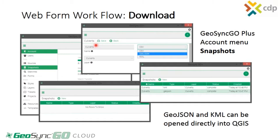You select the New button for snapshots. It opens a dialog where you'll give it a name. In this case, I'm using my culverts layer, so I'm calling it culverts — you can give it any name you want, including today's date. Then you select the type of snapshot you want to save — the file format. You have three options: CSV, GeoJSON, and KML. Once you select the file type, you select the layer you want the snapshot created from. I'll click the drop-down and select my culverts layer. When I save that, it creates a culverts snapshot in the format selected. Going back to the list, I've saved a snapshot of my culverts in both KML format and GeoJSON. Both of these formats can be opened directly in QGIS.